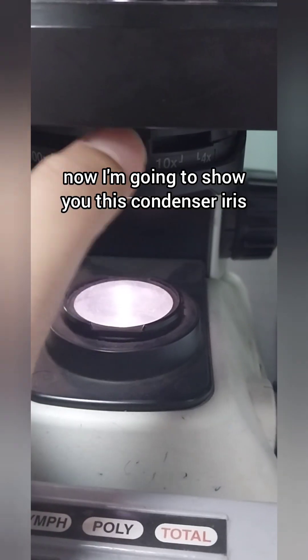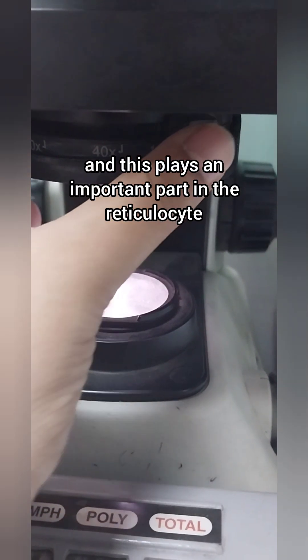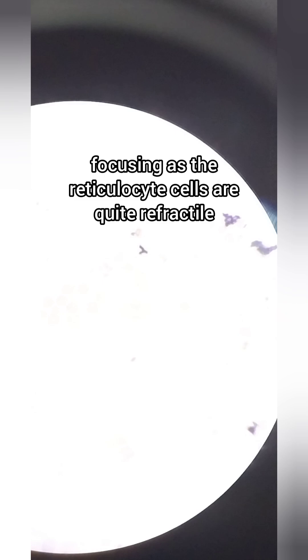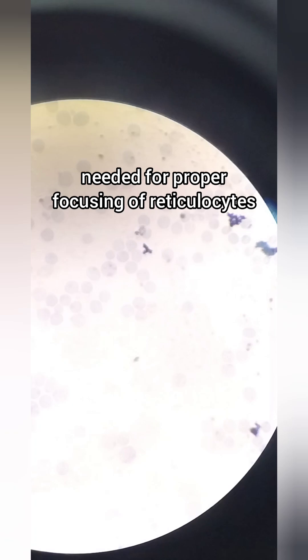I'm going to show you this condenser iris. This plays an important part in reticulocyte focusing, as the reticulocyte cells are quite refractile and the adjustment of light is sometimes needed for proper focusing of reticulocytes.